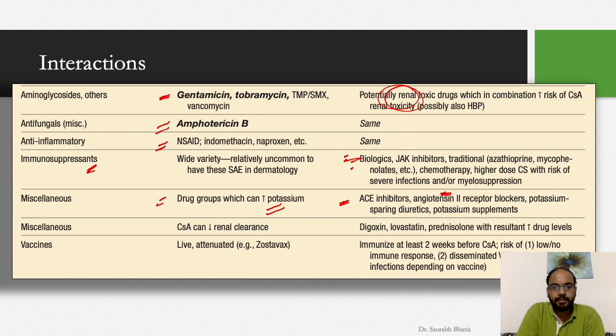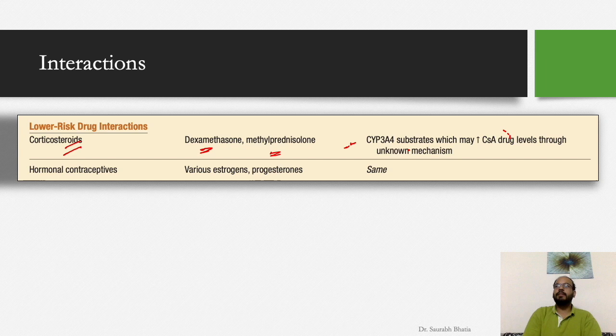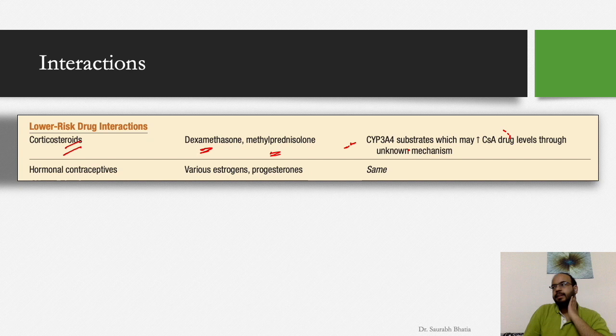Drugs that can increase potassium — including potassium-sparing diuretics, ACE inhibitors, and potassium supplements — must be used cautiously with cyclosporine given its tendency to cause hyperkalemia. When using cyclosporine with steroids — such as in pustular psoriasis in pregnancy, generalized pustular psoriasis, severe idiopathic urticaria, or when transitioning from high-dose systemic steroids — note that corticosteroids like methylprednisolone (Bicilol) may increase cyclosporine drug levels.